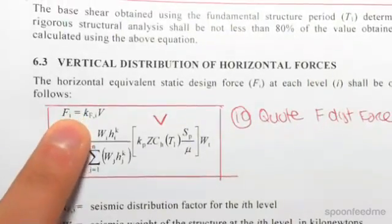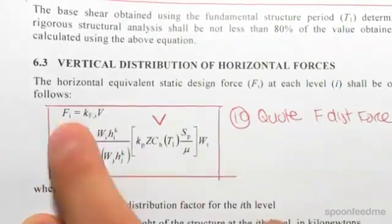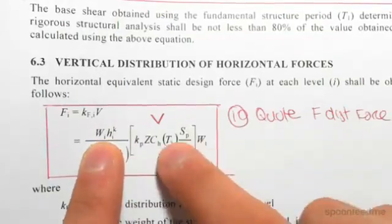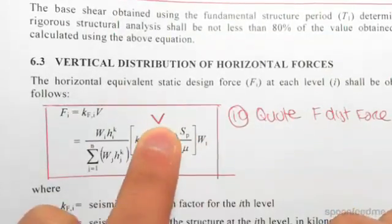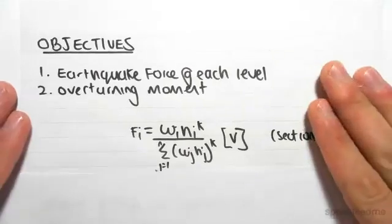So you can see we have a formula f subscript i equals kfi v. Expanded it looks like this. This kfi is this component and the v is this component. V is just the base shear which we've already found. So I'm just going to write this outside the code, just a little bit bigger. So that's what we want to be finding.